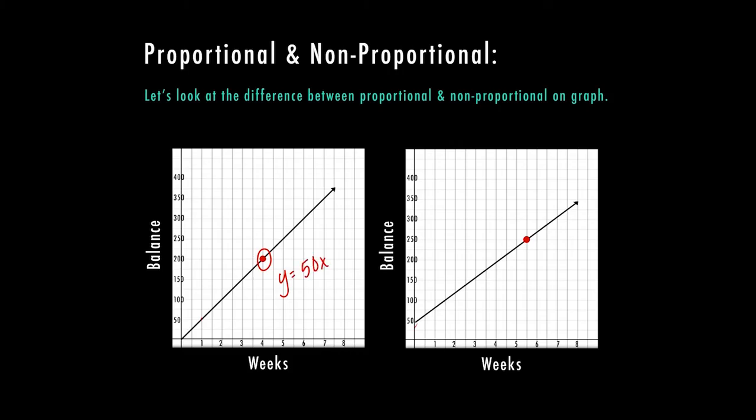At one week, we have $50. At two weeks, we have $100. Three weeks, we have $150. This one is a proportional relationship because at zero weeks, we had $0. So it goes through the origin.